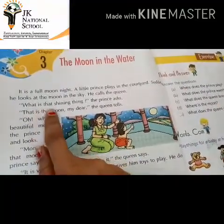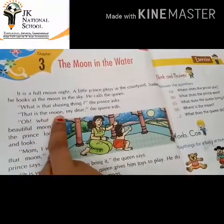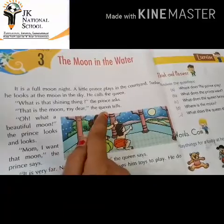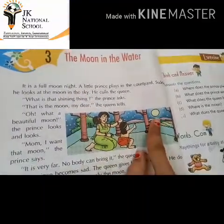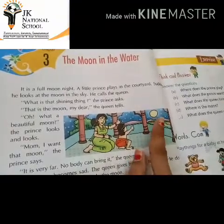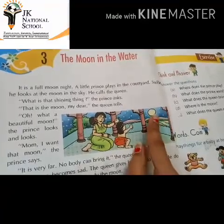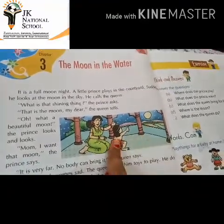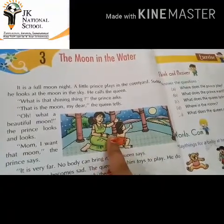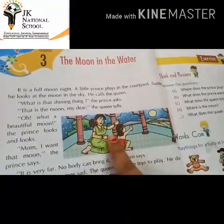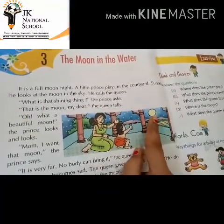The prince asks: 'What is that shining thing?' The queen replies: 'That is the moon, my dear.' So the prince is asking about the shining object, and the queen — his mother — answers that it is the moon.